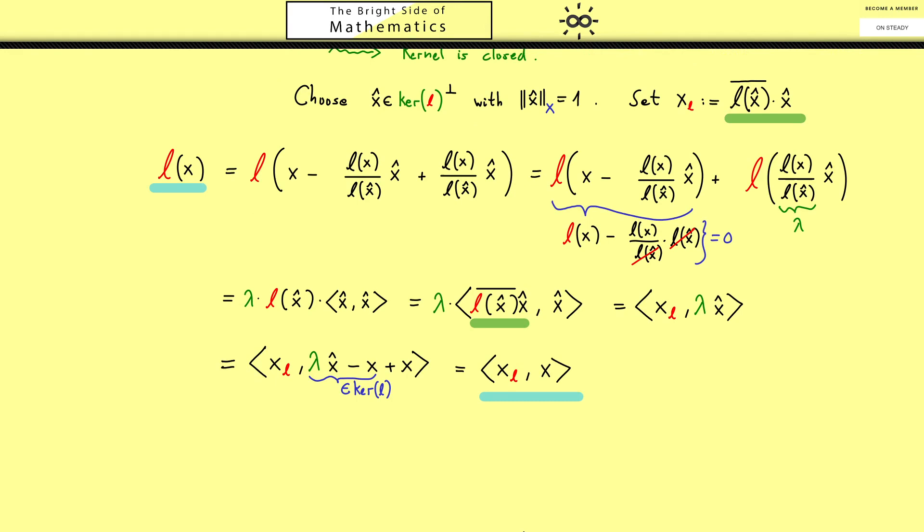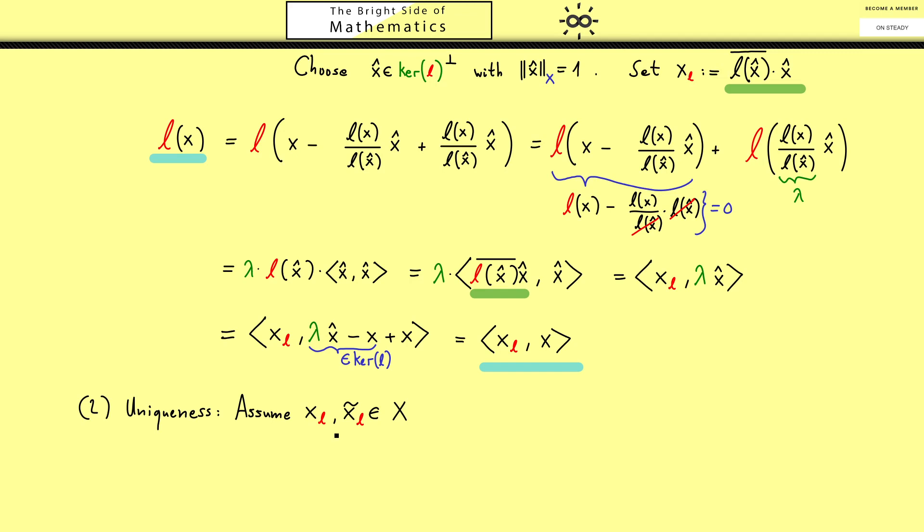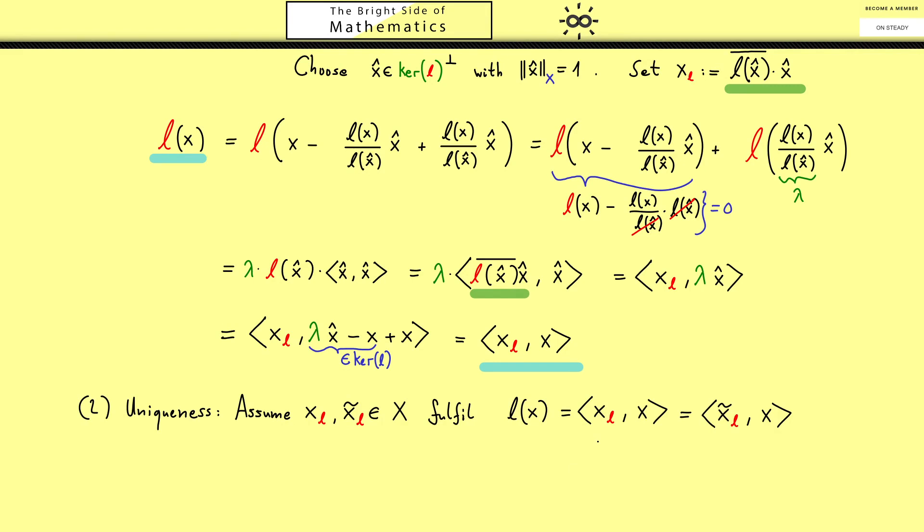Okay, then let's go immediately to the uniqueness part. What happens if we have two different xLs? Let's assume that xL and xL tilde fulfill both our equality. Here you should see immediately what you can do. You can bring both inner products on one side. Then we have that this inner product is zero no matter which vector you put into the right hand side. In particular you could put in the same vector you have on the left hand side. However, by the first rule of the inner product, the inner product is positive definite, you know this only holds for the zero vector. In other words xL and xL tilde are the same vector.